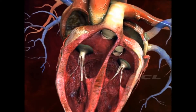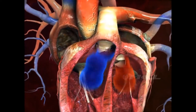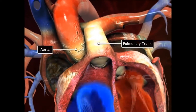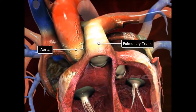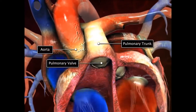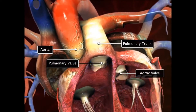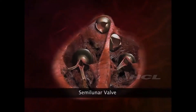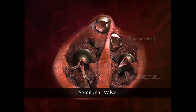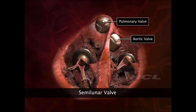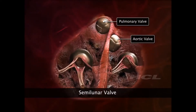There are also valves at the opening of the pulmonary trunk and the aorta. These are called the pulmonary valve and the aortic valve respectively. Because of their crescent moon shape, these two valves are also called semilunar valves.